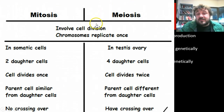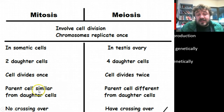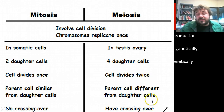To summarize: both mitosis and meiosis involve cell division, and chromosomes only replicate once. Mitosis occurs in somatic cells, produces two daughter cells, cells divide once, and the parent cells are similar to the daughter cells with no crossing over. Meiosis occurs in the testes or ovary, produces four daughter cells, cells divide twice but still replicate once, parent cells differ from daughter cells, and there is crossing over.